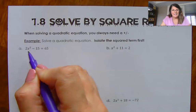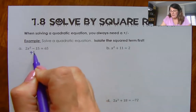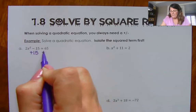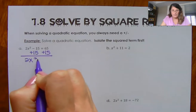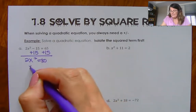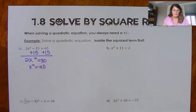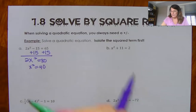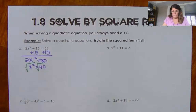So pretend like this is 2x² minus 15. Add the 15 to both sides. You've got 2x² is equal to 80. Divide by 2, and you have x² is equal to 40. Once you have isolated the squared term, then you can take the square root.